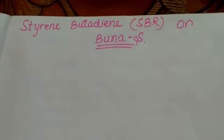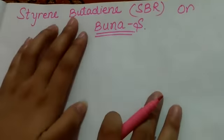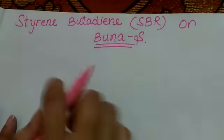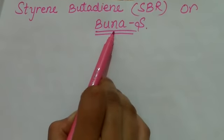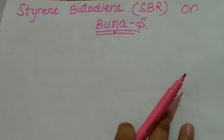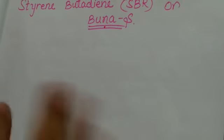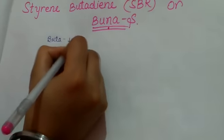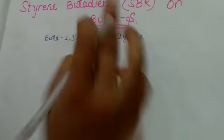Then we will study styrene butadiene, which we call SBR or Buna-S rubber. Styrene butadiene rubber - S for styrene, B for butadiene, and R for rubber. Buna-S, where BU stands for butadiene, Na stands for sodium, and S stands for styrene. It has slightly less strength than natural rubber.